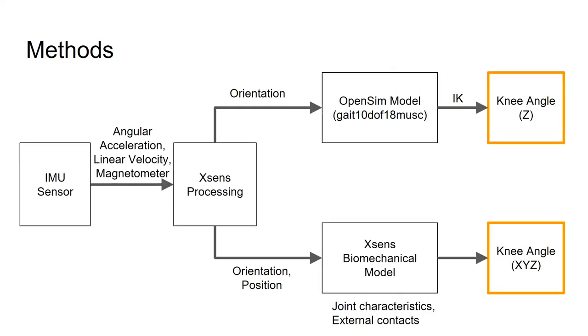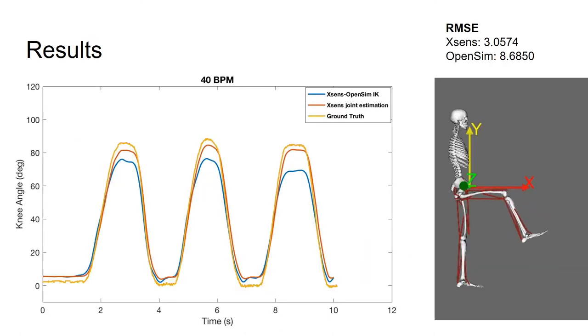So now let's take a look at our knee angle calculations for the different methods we used and compare. On the right you'll see the motion we got from our OpenSim model inverse kinematics method. On the left is a graph of our results, and notice that the XSens joint estimation, shown in orange, is closer to the ground truth video marker data shown in yellow than our OpenSim model inverse kinematics method shown in blue.